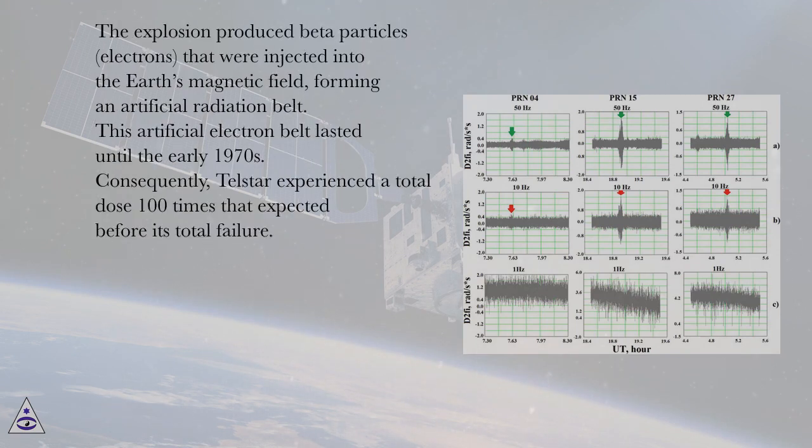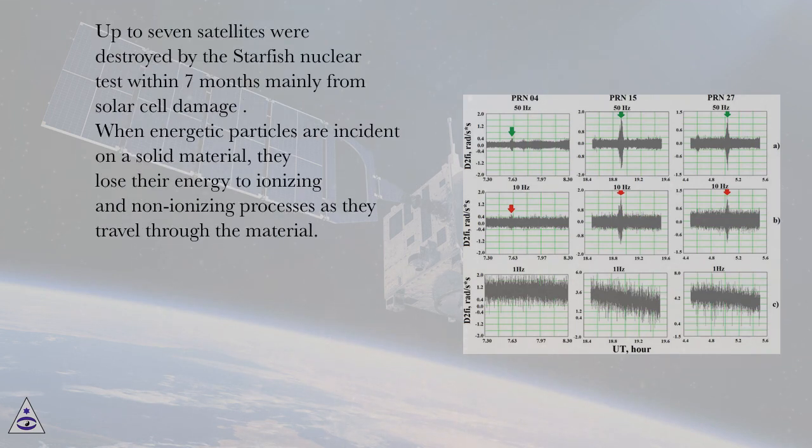The explosion produced beta particles (electrons) that were injected into the Earth's magnetic field, forming an artificial radiation belt. This artificial electron belt lasted until the early 1970s. Consequently, Telstar experienced a total dose 100 times that expected before its total failure. Up to seven satellites were destroyed by the Starfish nuclear test within seven months, mainly from solar cell damage.